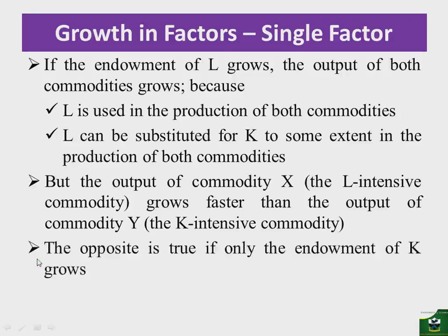The opposite is true if only the endowment of capital grows. If capital grows, the output of Y will grow faster than the output of X, because capital is substituted for labor to some extent in the production of both commodities. As this continues, more and more Y will be produced, and growth will be more observed in Y compared to X, since capital has increased and Y is capital-intensive.